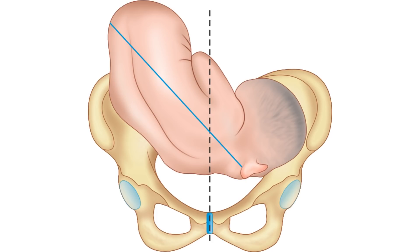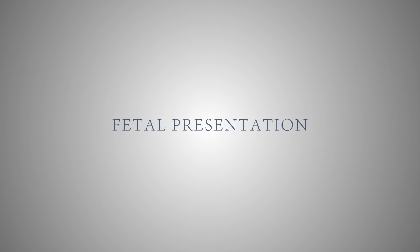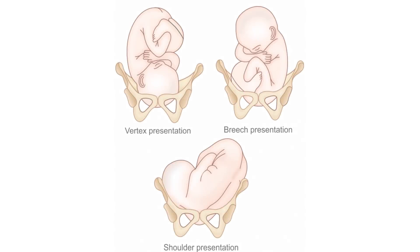The oblique lie is usually unstable and becomes either longitudinal or transverse during the course of labor. Fetal Presentation can be described as the fetal body part which occupies the lower pole of the uterus and thereby enters the pelvic passage first.